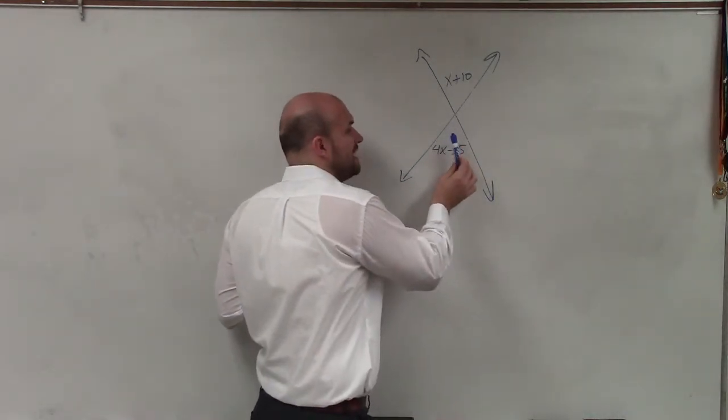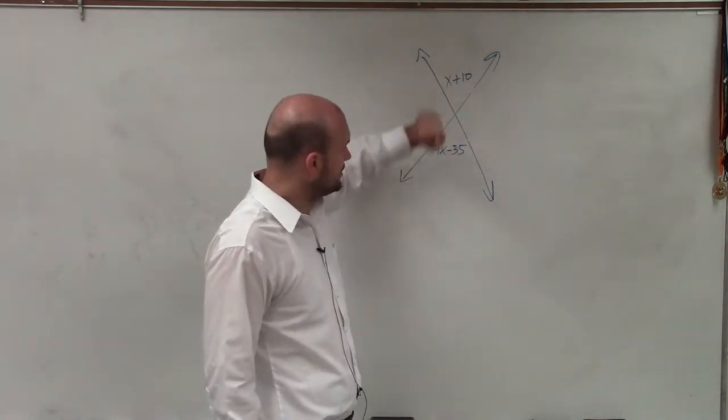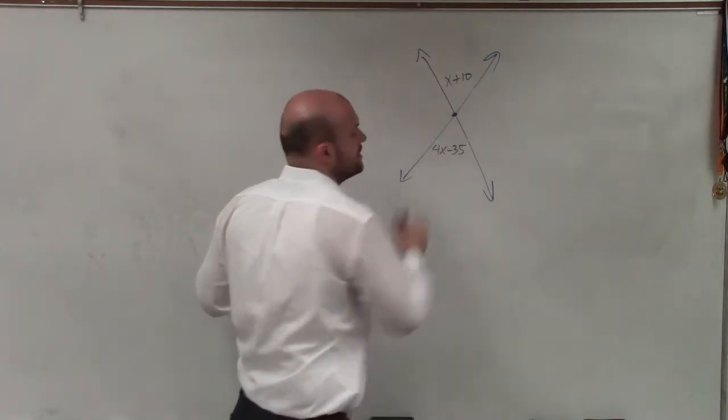If two angles make up a line, then they are a linear pair and what we call supplementary. Or if they're directly across from each other, do not share a side but do share a vertex, then we call them vertical angles.